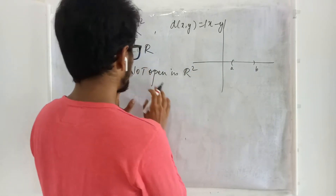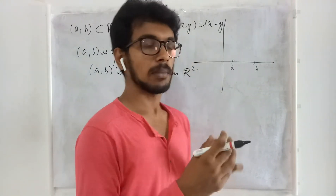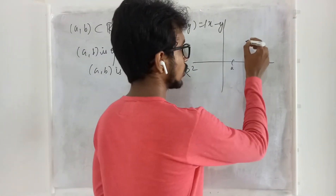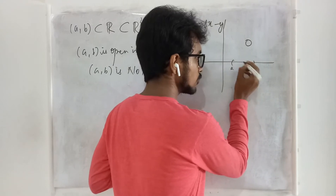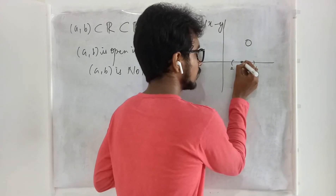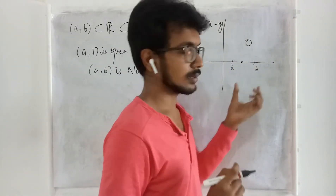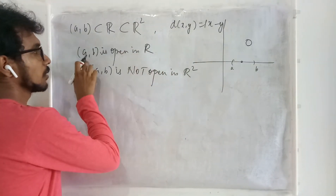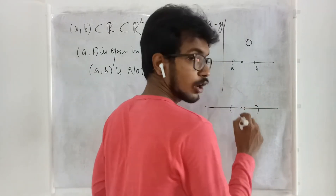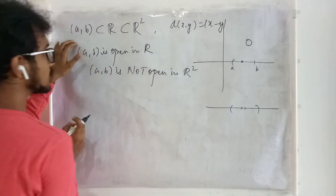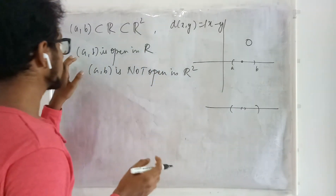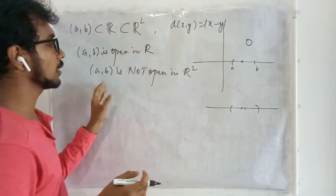The open sets in R2 are neighborhoods, which are like circles. Whatever point you choose and whatever small radius you pick, you will have a circular neighborhood which is not completely contained in the segment. That is why it is not open in R2. But when I consider only the real line, the neighborhood is going to be a segment — the same set with the same metric, but dealing with things in two different ways. It is open in R, but it is not open in R2.